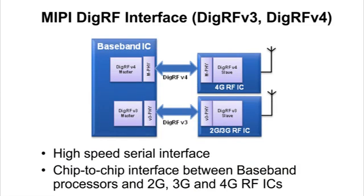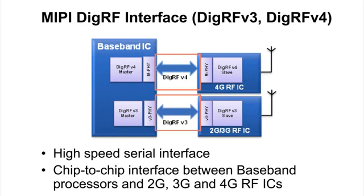The MIPI DigRF defines the serial interface between RF transceiver ICs and baseband processors, meeting the increased data throughput requirements for mobile terminals. DigRF V3 supports 2G and 3G RF ICs. DigRF V4 is the latest specification targeting 4G standard interfaces such as LTE and mobile WiMAX. The DigRF V4 specification also supports existing 3G standards.